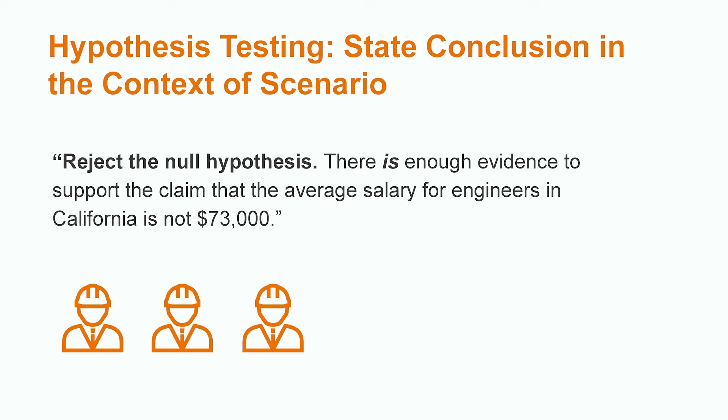If we were to not reject the null hypothesis, we would have said, do not reject the null hypothesis. There is not enough evidence to support the claim that the average salary for engineers in California is not $73,000.